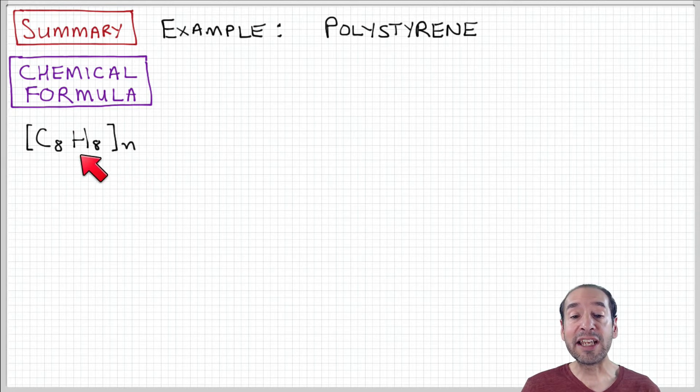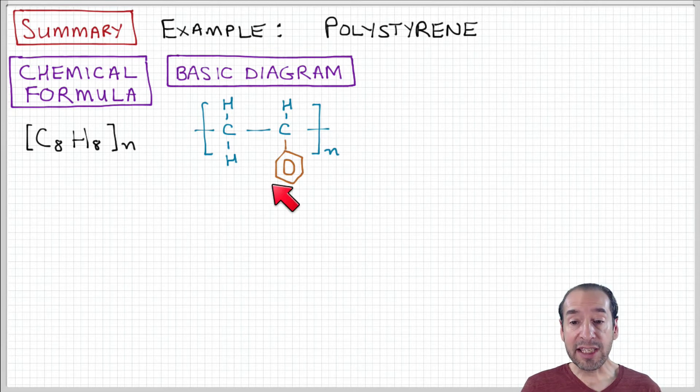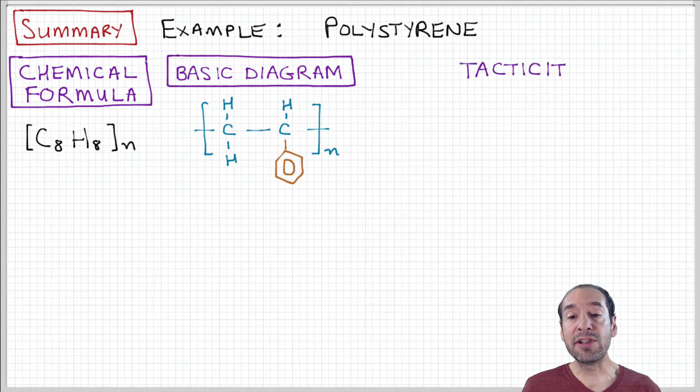There's eight carbons and eight hydrogens in each repeat unit. But it doesn't tell me anything about how those are arranged along the backbone. Then we use some basic diagrams to show the key features of the chemical structure here. So now I can see from this diagram that some of these carbons and hydrogens are arranged into this ring structure. And the presence of this side group then will affect the properties of the resulting material.